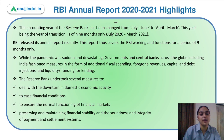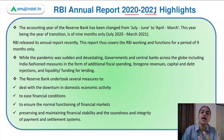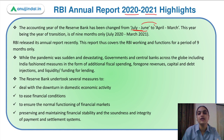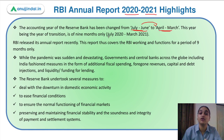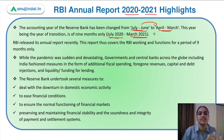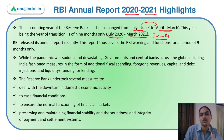RBI has released its annual report for the year 2020-21. Usually, RBI's accounting year was from July to June, but recently it decided to transition to April to March. That's the reason why this year's annual report covers the period from July 2020 to March 2021 only — a 9-month period, not an entire year.